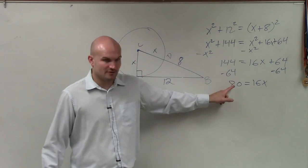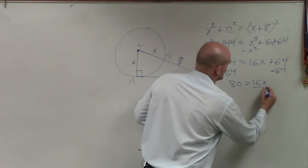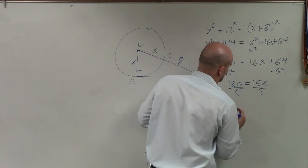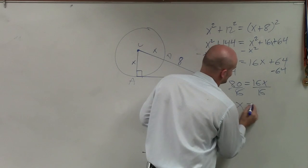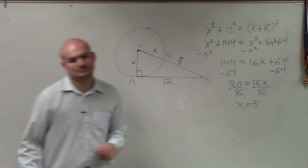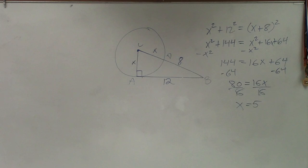144 minus 64 is 80. So I divide by 16, and I get x = 5.